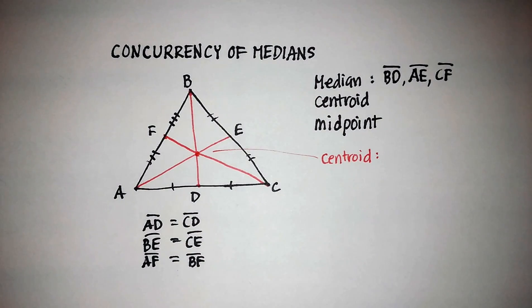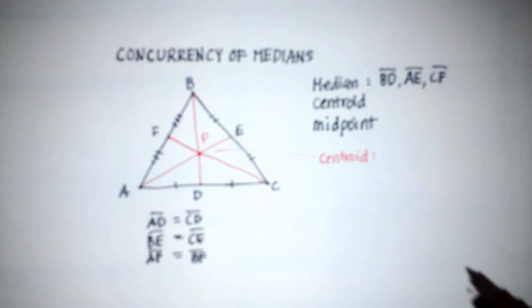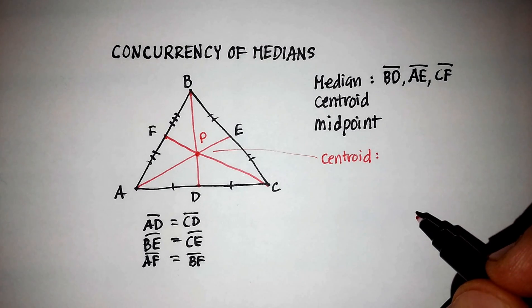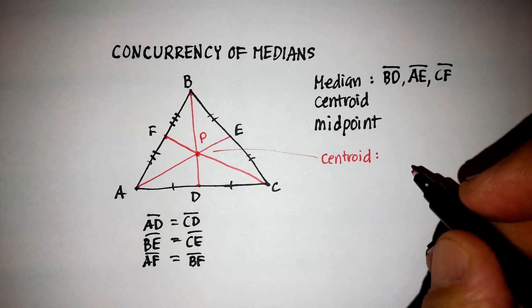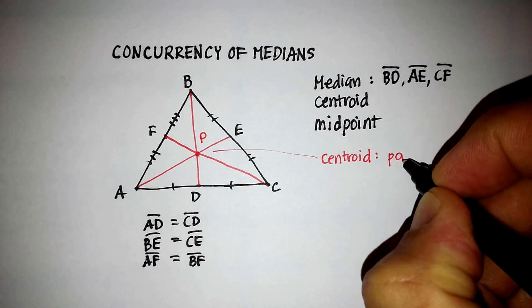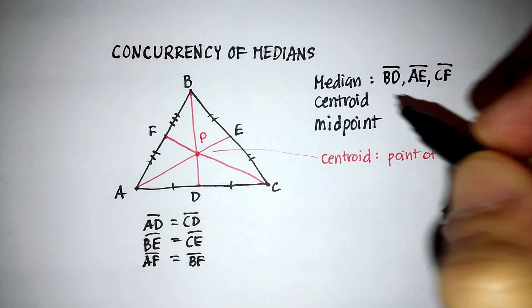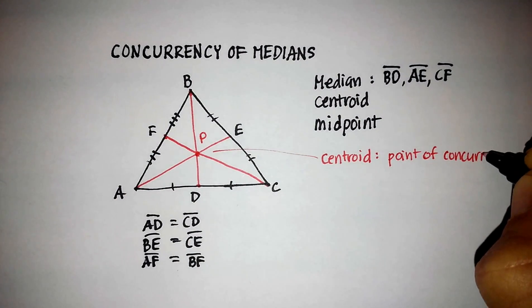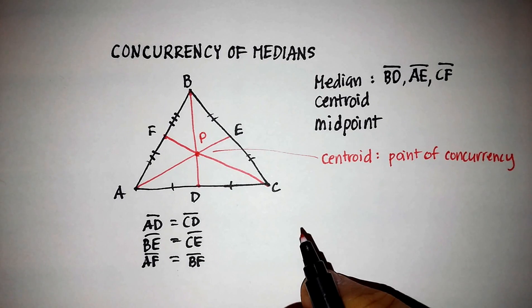Now, what's important about the centroid? Call this one P. Now, the centroid is interesting because it's a point of concurrency. So we know that it is a point of concurrency. That's a concurrency of medians.